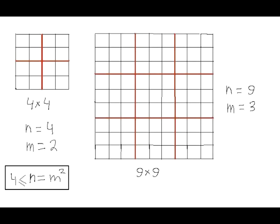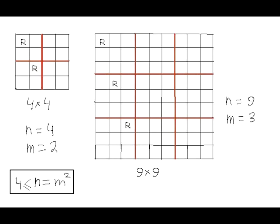We can prove that not all peaceful configurations of rooks on such boards leave a square region m by m that does not contain any rooks. In other words, that integer k in the question is strictly less than m. For that, we will construct a special peaceful configuration of rooks with such high density that it does not leave room for a single m by m square region containing no rooks. Let's place exactly one rook in each m by m square region, starting with the first vertical column of m by m square regions.